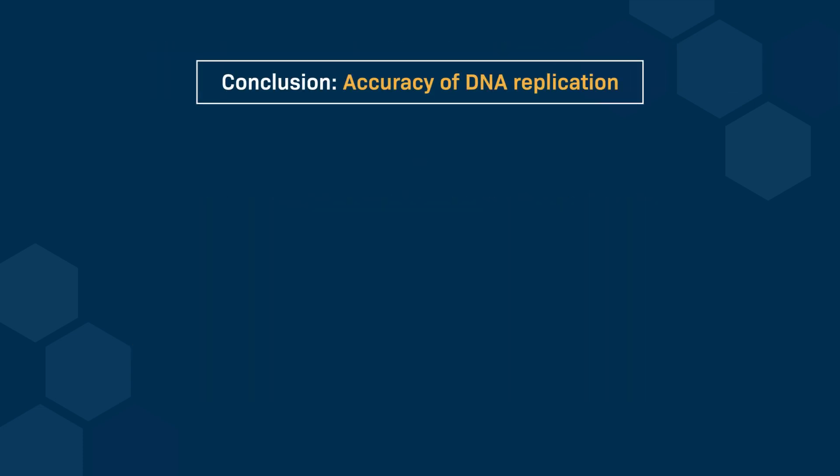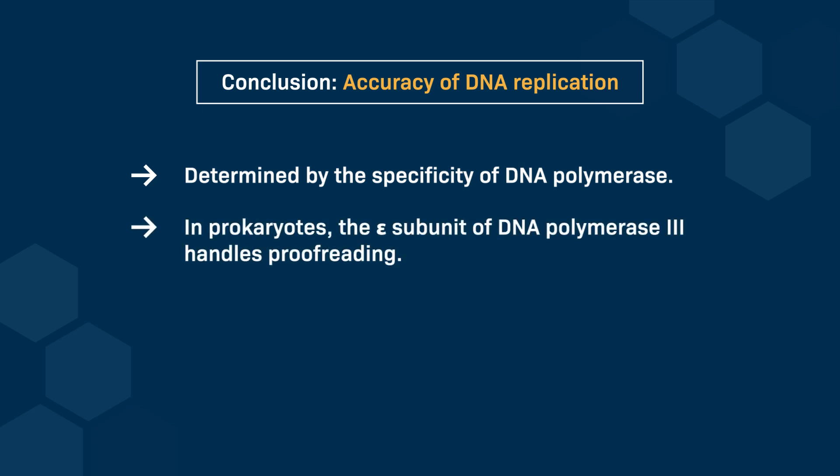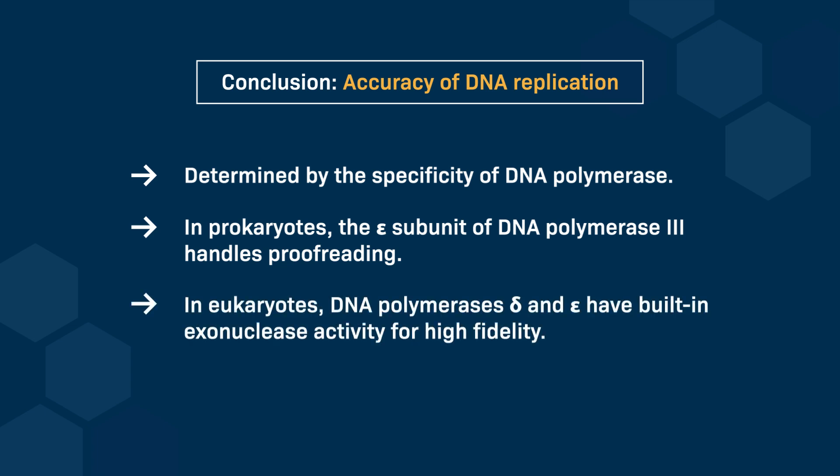In conclusion, the survival of organisms and the rate of cell division depend heavily on the fast and accurate replication of DNA. The accuracy of this replication is determined by the specificity of the DNA polymerase. In prokaryotes, the epsilon subunit of DNA polymerase 3 is responsible for proofreading activity. In eukaryotic DNA polymerases delta and epsilon, built-in exonuclease activity ensures high fidelity during DNA replication.